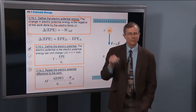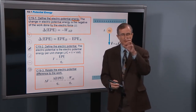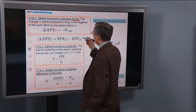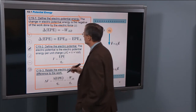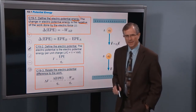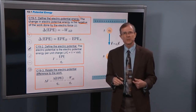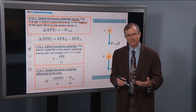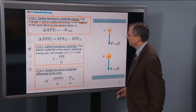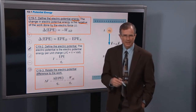The electric force is just Coulomb's law — the force K Q1 Q2 over R squared. We're defining the change in the electric potential energy as the negative of the work done by that electric force. You've seen this before: in first semester, we defined the gravitational potential energy as the change in the work done by the gravitational force. We're just doing the same thing here with electric potential energy. EPE is how we denote the electric potential energy.